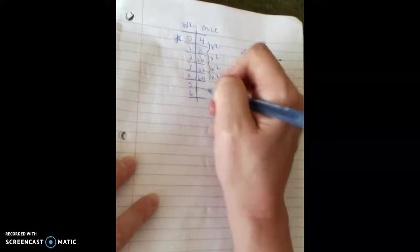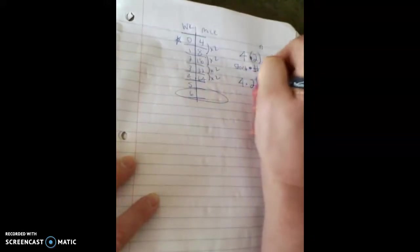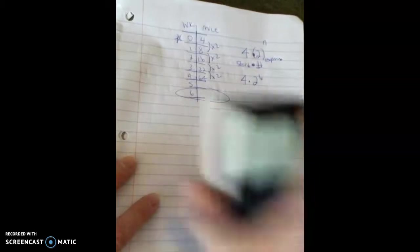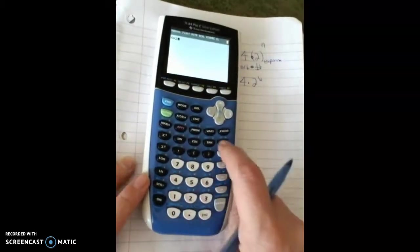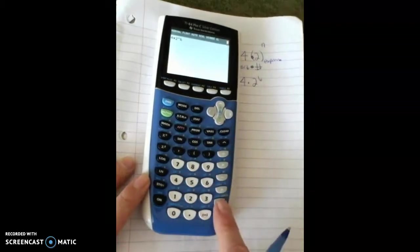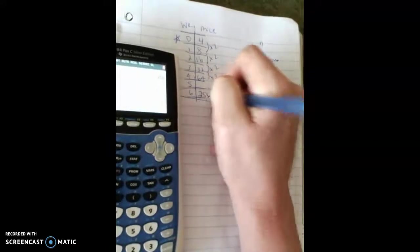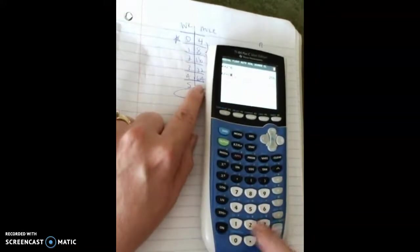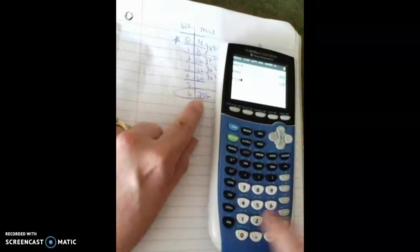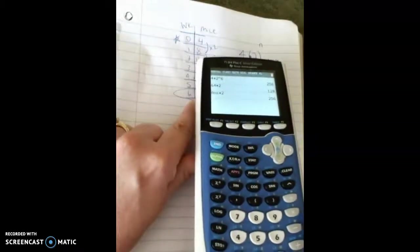So if I want to find the sixth term right here, like after six weeks, I would just plug it into my formula. So I would take four times two raised to the sixth power, and I would expect 256 mice. And I can check my answer by taking 64, doubling it and getting 128 and doubling again and getting 256. So it does work.